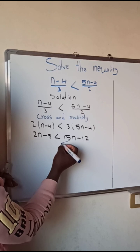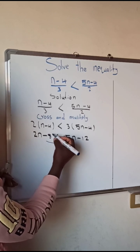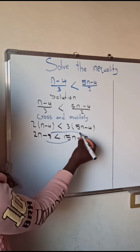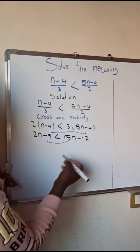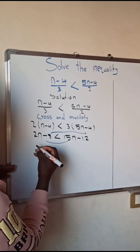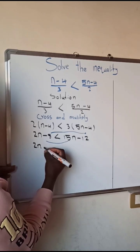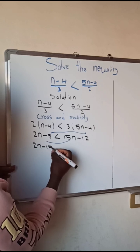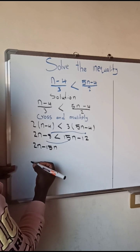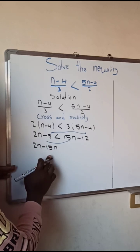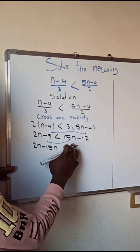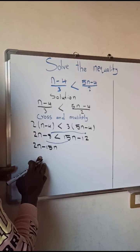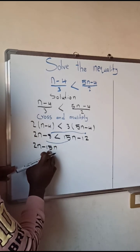So we have here 2n minus 15n. Why do we say 15n became negative? Because when we are taking a number from a side to side, the sign always changes. So this is what happened here.